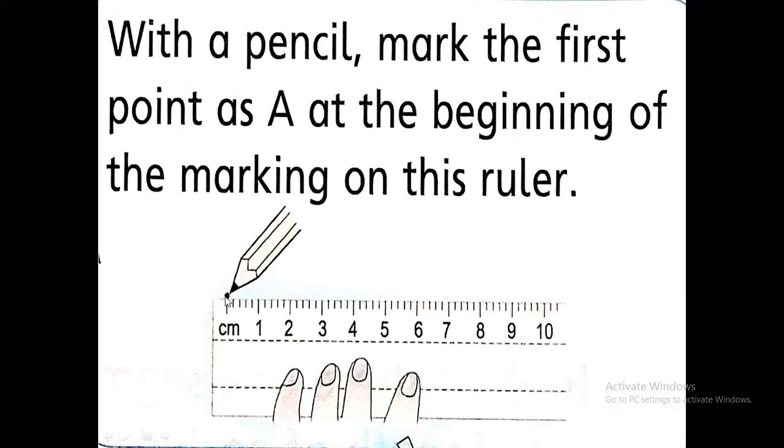Mark a point here. This is the beginning point. This A will be called beginning point. So we will put a dot here. After this and try to hold the ruler firmly.